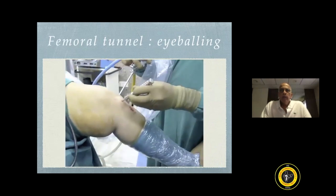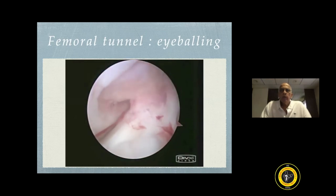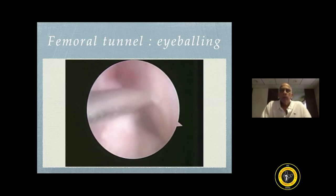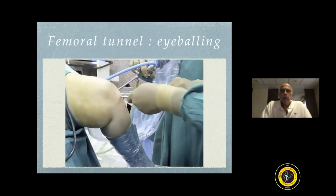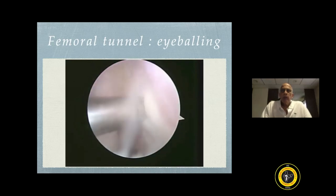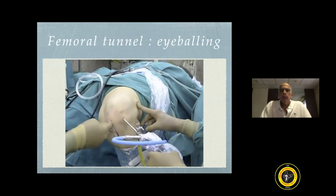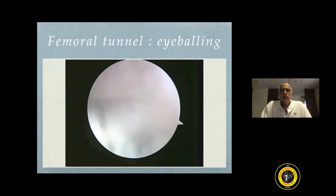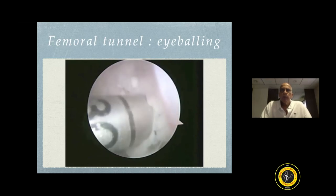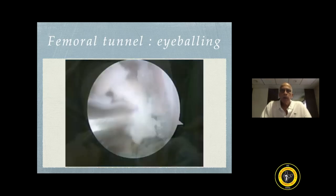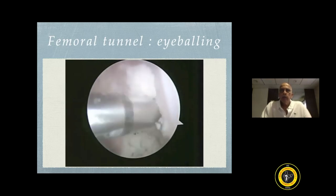Here are different ways by which you can create these oblique femoral tunnels. If you do not have instrumentation, you can do it by eyeballing. Here you can see we have passed an awl, located the femoral footprint, and made a perforation at the anatomic site. We then replace the awl with a bead pin directed towards the anterolateral aspect of the thigh. You can see the penetration of this bead pin at the lateral cortex. Once you are happy with the positioning, you can dilate with the appropriate size reamers and then with a 4.5 reamer if you are going to use any kind of distal fixation devices like an endo button. This is how you can drill the femoral tunnel by eyeballing.